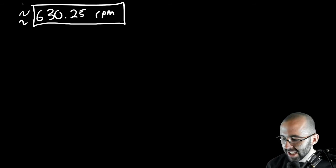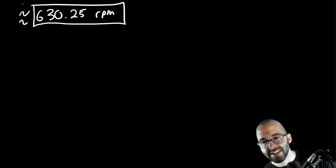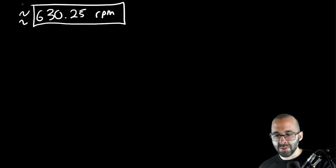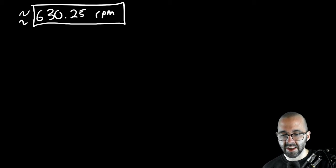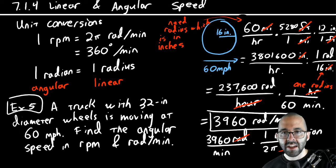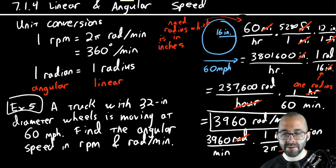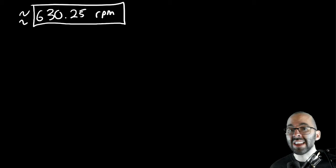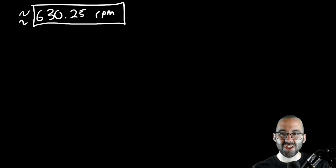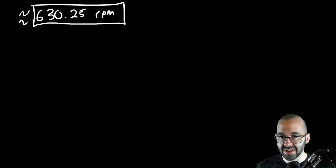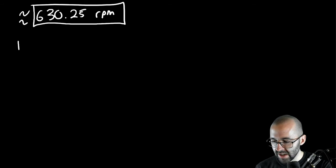That's the applications process — there are many variations, but the underlying principle is always the same: get things in terms of your radius so you can convert between angular and linear. Now let's blaze through another example so you have it written down — it will go fast, so feel free to pause or slow down the video.